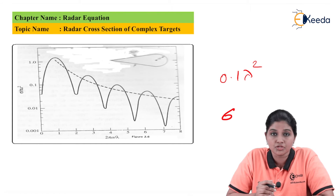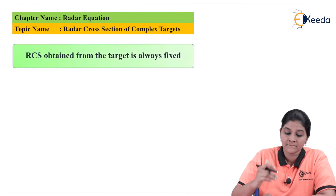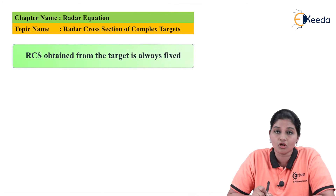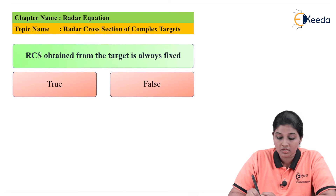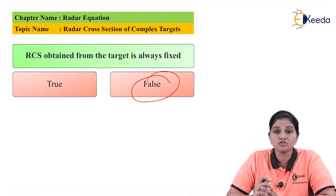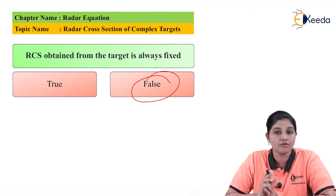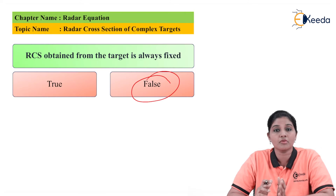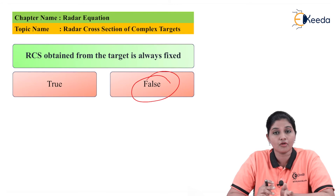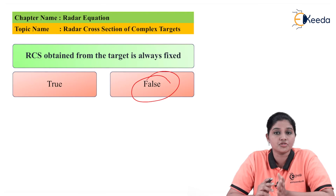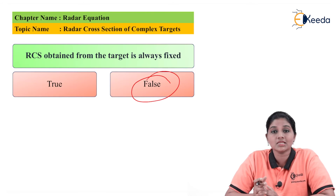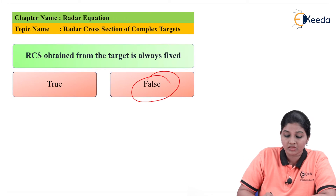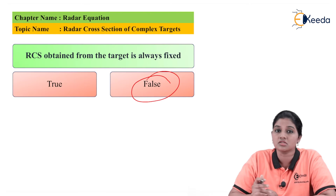Now let's move to the MCQs. The first question is: RCS obtained from the target is always fixed — true or false? The answer is false, because it is not possible to obtain the same value of RCS every time. If the object is viewed from the rear side, the RCS value is different from when it is viewed from the front-end side. If the radar system views the object perpendicular to the surface, a large value of RCS is obtained. Therefore, it is not always necessary to obtain the same value of RCS every time.